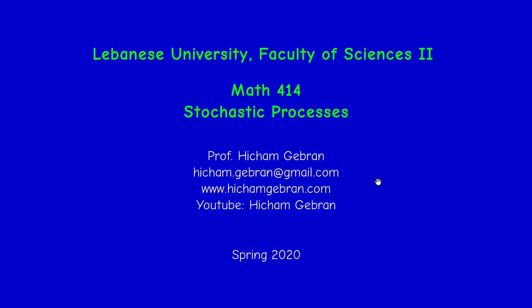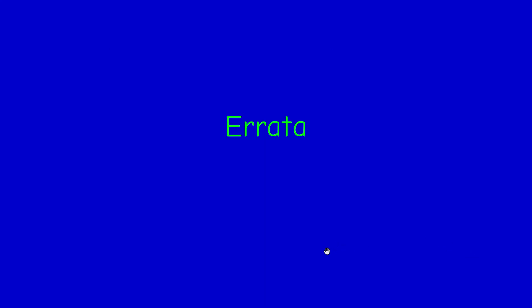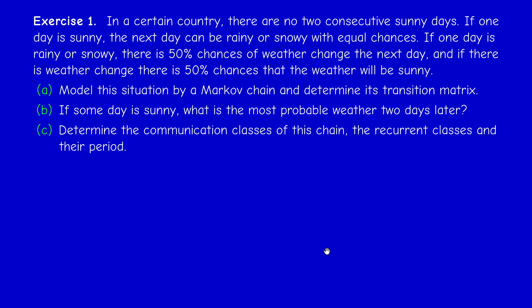Hello and welcome to this new video. In this video I'm going to correct exercise one — there was a mistake in the last video. The question was: in a certain country there are no two consecutive sunny days. If one day is sunny, the next day can be rainy or snowy with equal chances. If one day is rainy or snowy, there is a 50% chance of a weather change.